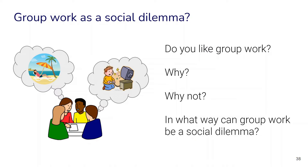We can think about simple examples like group work in school or at university, and to what degree it is a social dilemma. If you think about working in groups — do you like it? Why or why not? In what way can group work be a social dilemma? If a group of four students has to work on a project together, individually each might think: maybe I won't do so much work — the other people will pick up most of it and I can do other fun stuff like playing video games or meeting friends. But if everybody thinks like this, the whole group work will suffer and the whole group will get a bad grade.